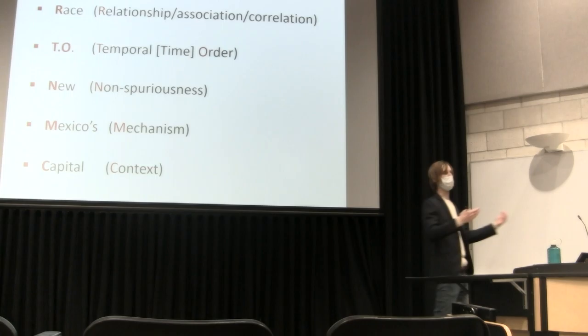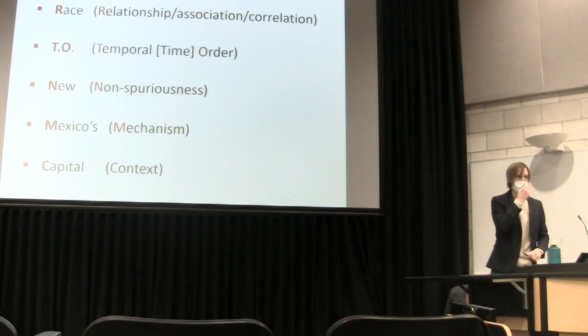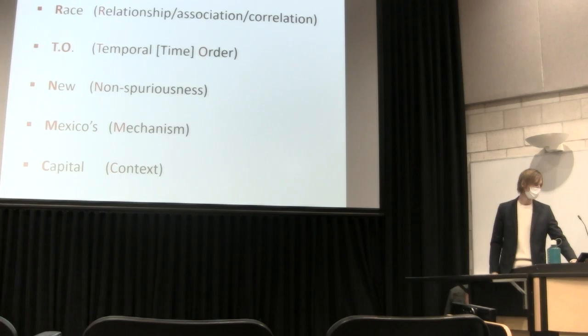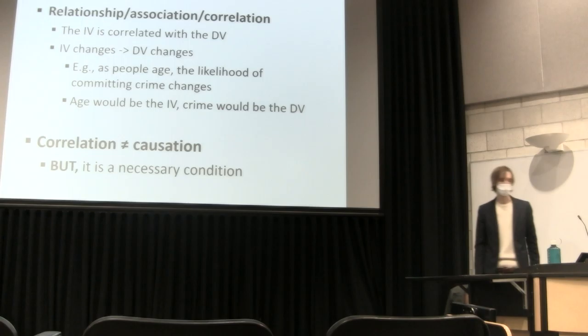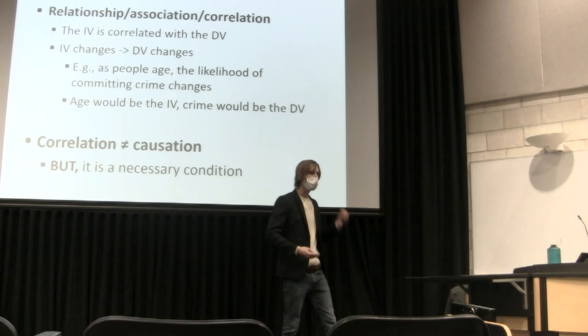The 'New' corresponds to non-spurious. Spurious is another one of those fancy words — it basically means false. So we're basically saying not a false relationship. 'Mexico's' is when we get into mechanism. And 'capital' is context. So we're going to go through each one of those. If you remember 'race to New Mexico's capital,' then you can remember all these specific things.